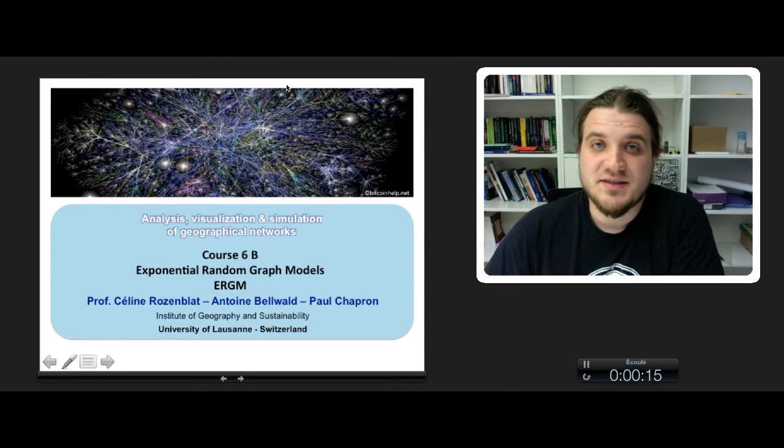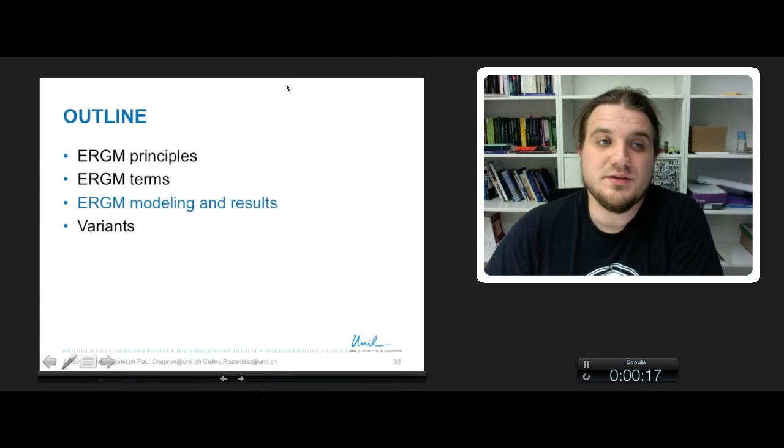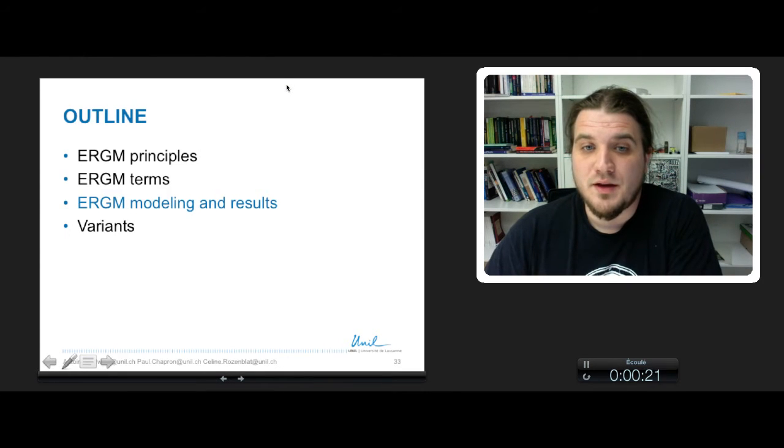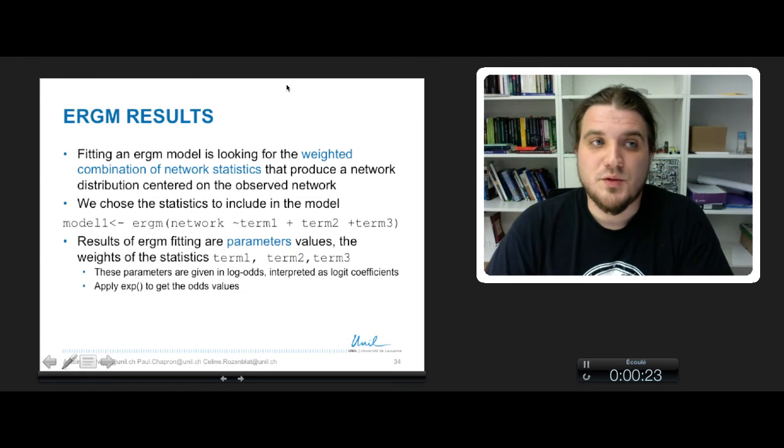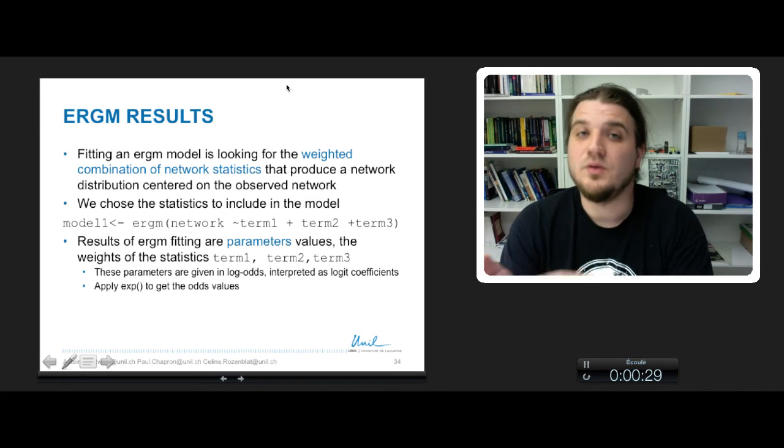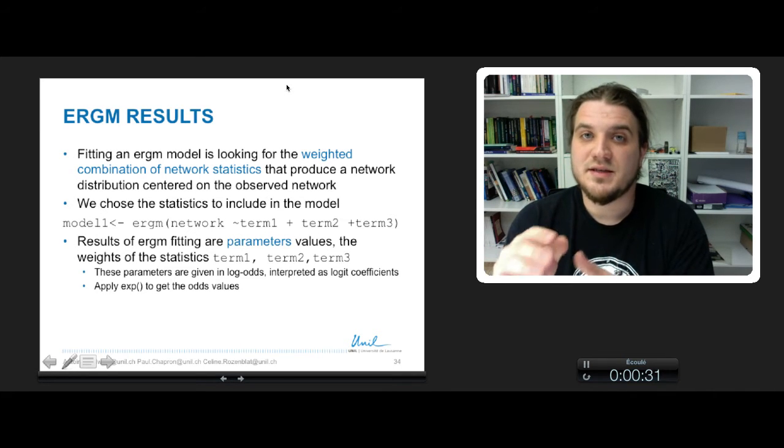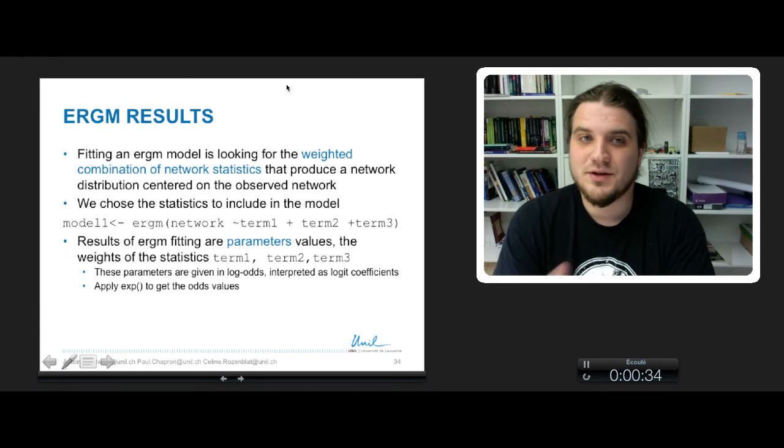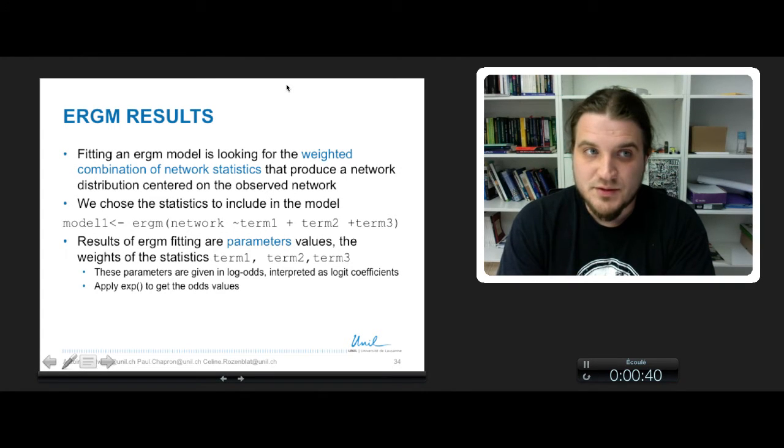The third part of course 6b on ERGM will be about the ERGM modeling and results. To summarize, fitting an ERGM model is looking for the weighted combination of network statistics that produce a network distribution centered on the observed network.